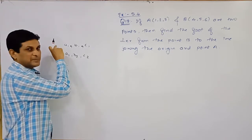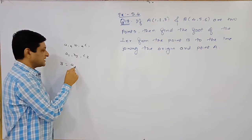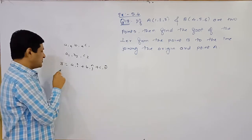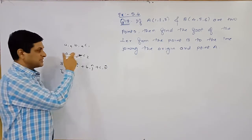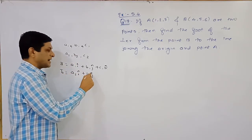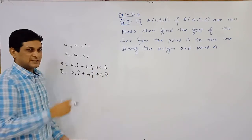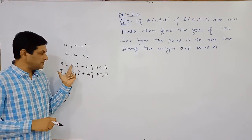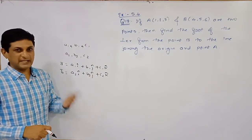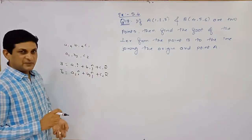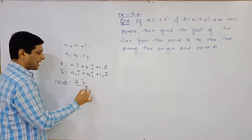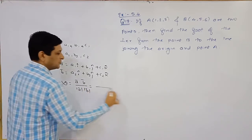If the direction ratio of a line is given, we can find the vector along that line. Let vector a-bar be the vector along line 1: a1·i-cap + b1·j-cap + c1·k-cap. Vector b-bar along line 2 is: a2·i-cap + b2·j-cap + c2·k-cap. The formula for the angle between two vectors is: cos θ = (a-bar · b-bar) / (|a-bar| × |b-bar|).